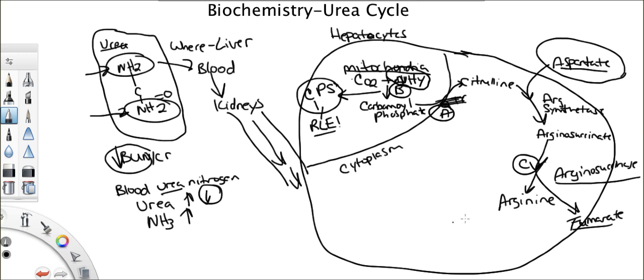So now we have arginine. Arginine goes to ornithine. What enzyme does that? Arginase. You have to know the enzyme. What is so important about this step? This is the step where urea is produced. This is very important.